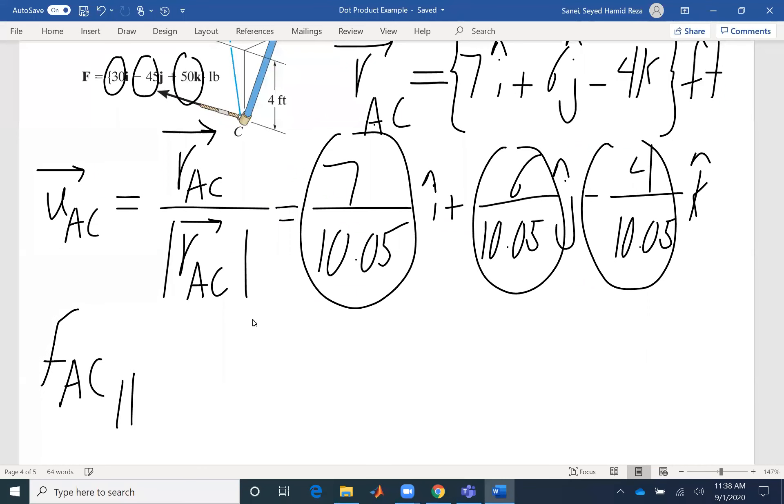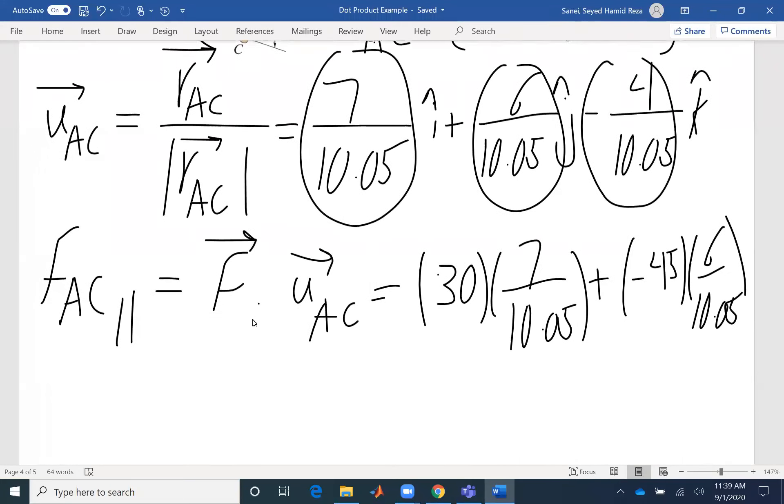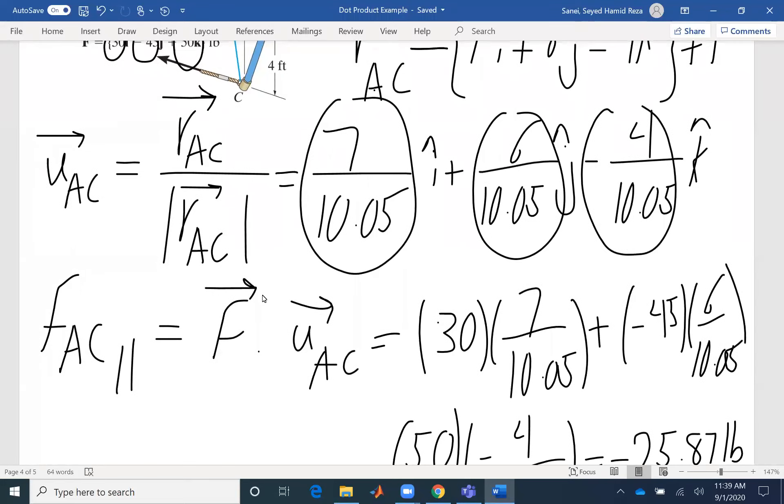Therefore, FAC would be F. That would be 30 times 7 over 10.05 plus the next component is negative 45 times 6 over 10.05. The third component is 50 times negative 4 over 10.05. If I do the multiplication, I get one answer, and that's negative 25.87. And the unit is pound here, not Newton.